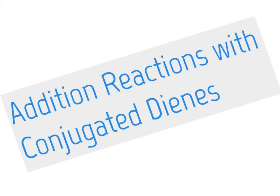In this video, we begin to look at types of reactions that conjugated dienes undergo, beginning with addition reactions. Addition reactions are also undertaken by alkenes, and the types of compounds that will add across conjugated diene double bonds are analogous to those that will add across standard alkene double bonds.